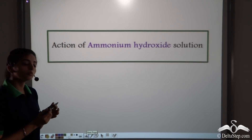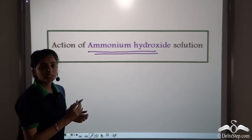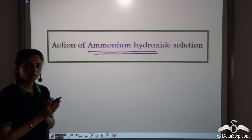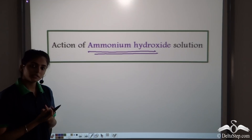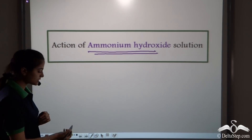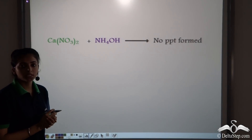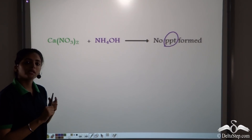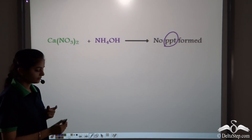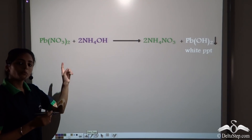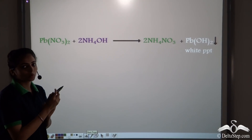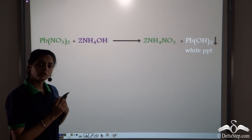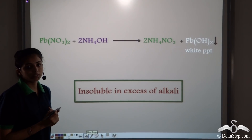Now we will see how ammonium hydroxide helps us in the identification of the metallic ion. We take a particular salt and make it react with ammonium hydroxide. It forms a precipitate which is dissolved in excess of alkali. When calcium salts react with ammonium hydroxide, no precipitate is formed — it forms a clear solution. When lead salts react with ammonium hydroxide, they form the corresponding salts and lead hydroxide. This lead hydroxide is a white precipitate, and when dissolved in excess of alkali, it is insoluble in excess of alkali.